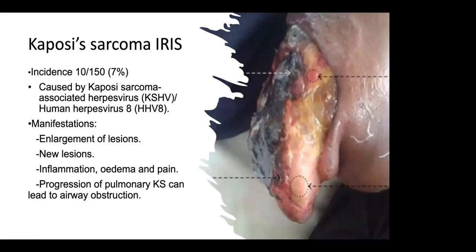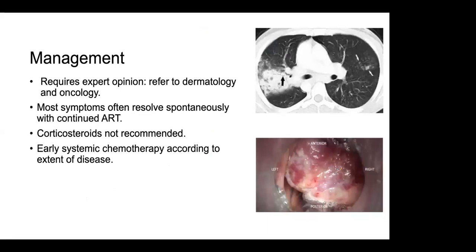Kaposi's sarcoma-related IRIS has an incidence of around 7%. It is caused by Kaposi's sarcoma-associated herpesvirus, or human herpesvirus 8. Manifestations include enlargement of new lesions, new lesions, inflammation, edema, and pain. Progression of pulmonary Kaposi's sarcoma can lead to airway obstruction. Management requires referral to oncology, and in larger centers to dermatology. Most symptoms usually resolve spontaneously when ARVs are continued.